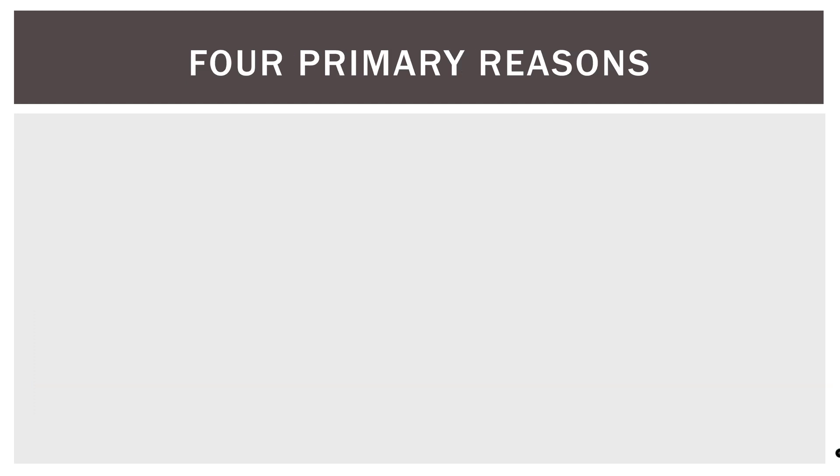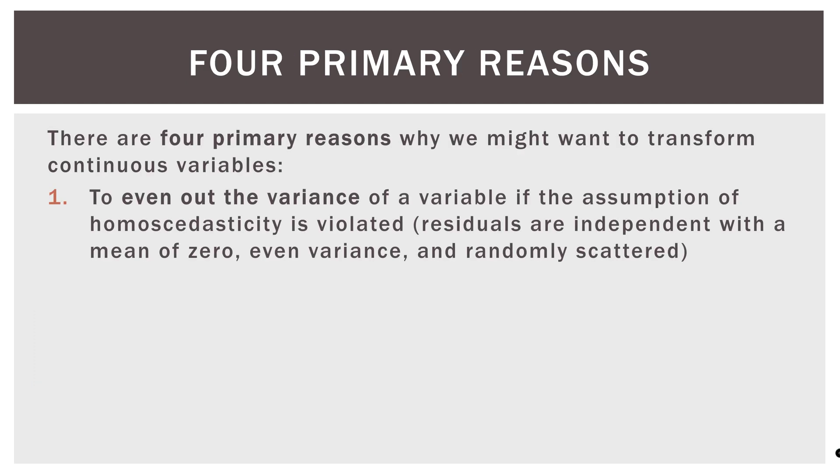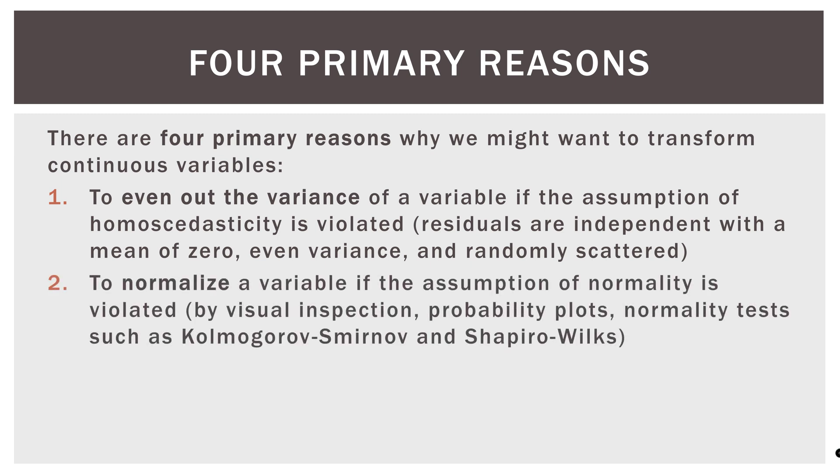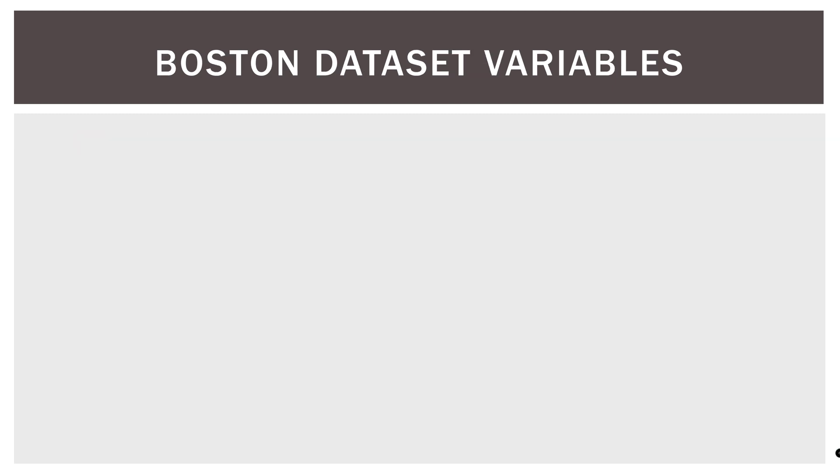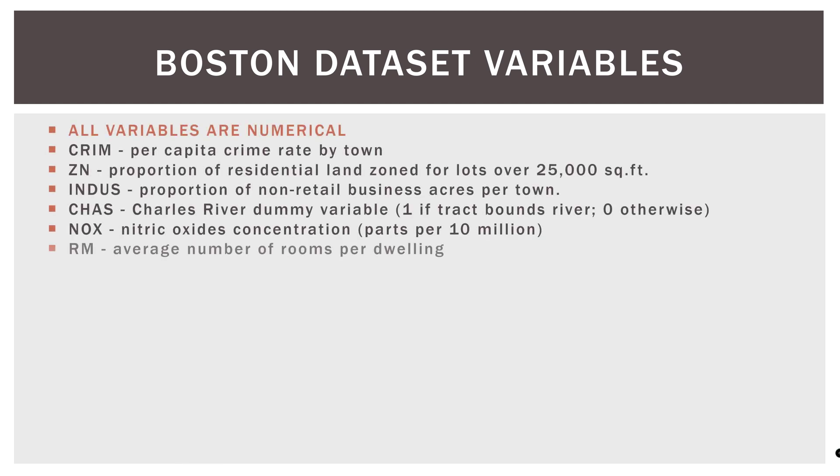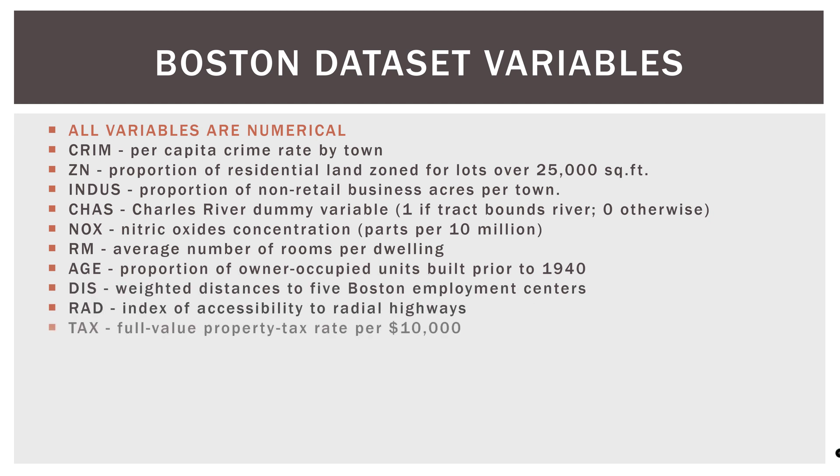So four primary reasons why we might transform variables. One, to even out the variance. Two, to normalize a variable. Three, to linearize the regression model. And four, to reduce the impact of outliers and high leverage observations. I went into more detail about those on the prior videos. So check those out if you want to go more in depth about these reasons. We are using the Boston data set in this example. So all the variables are numerical. And here is each variable and what it measures.